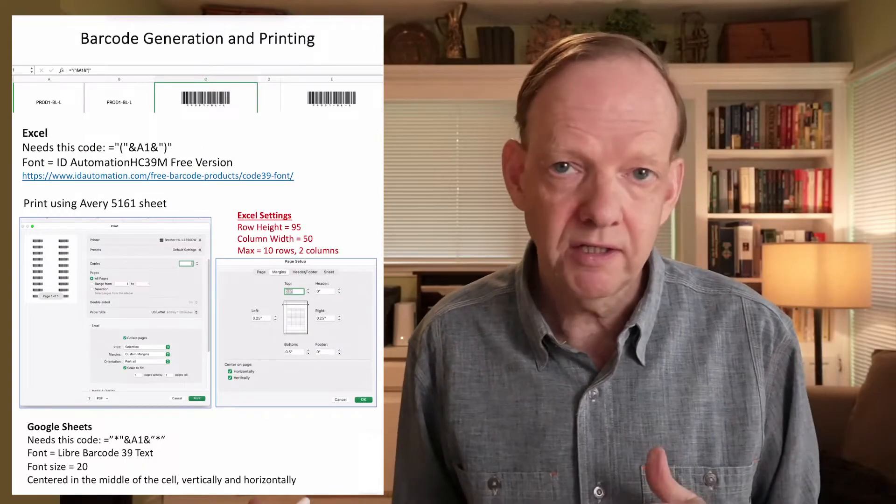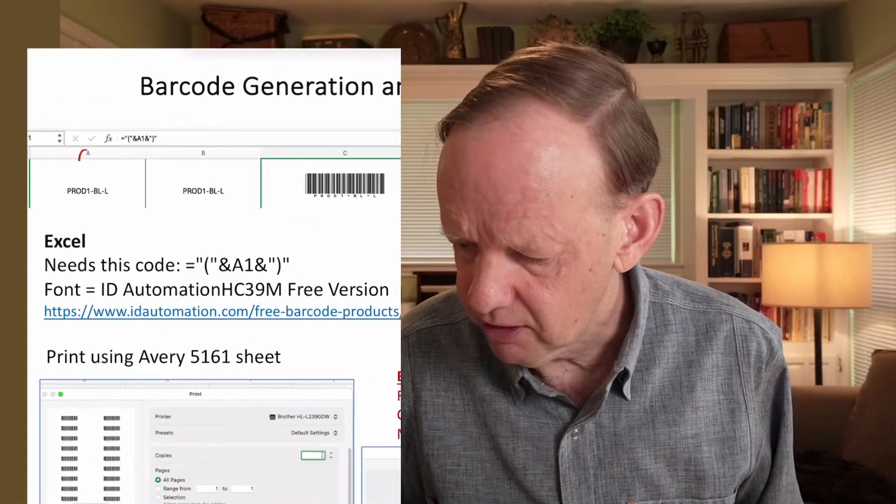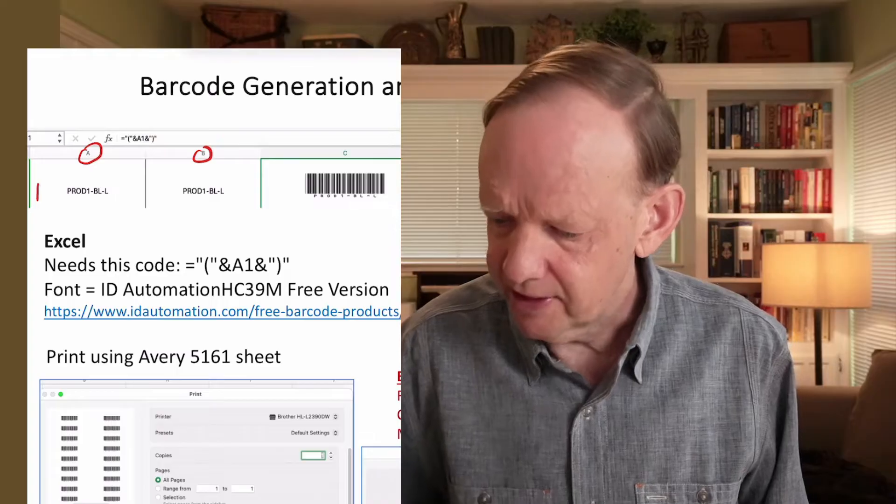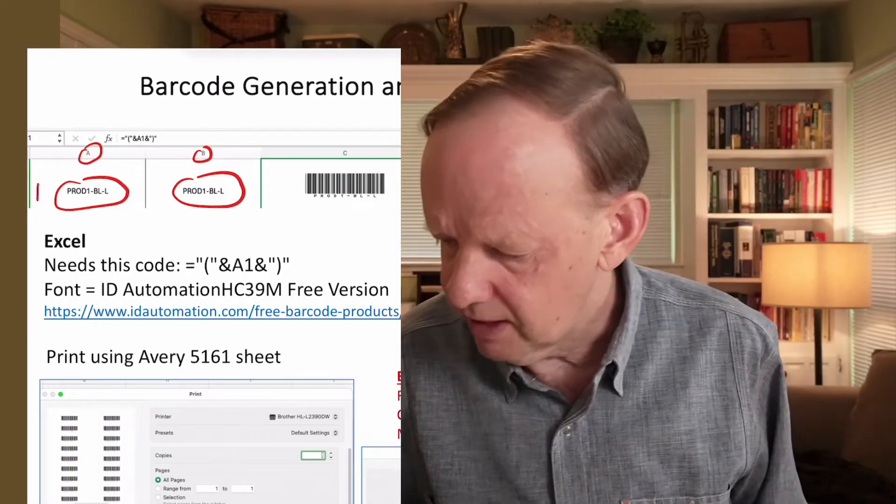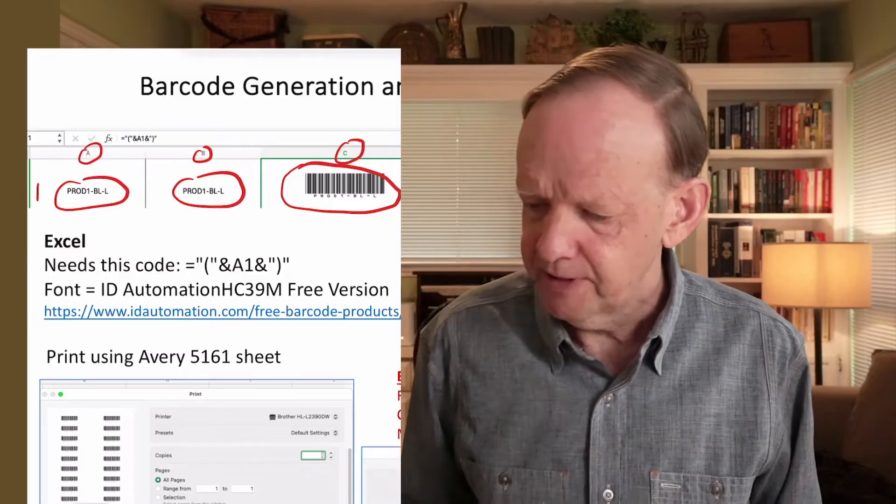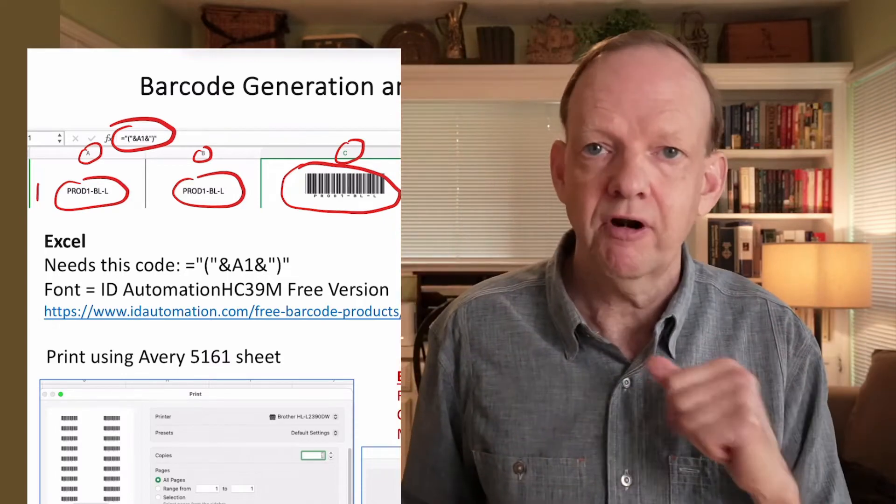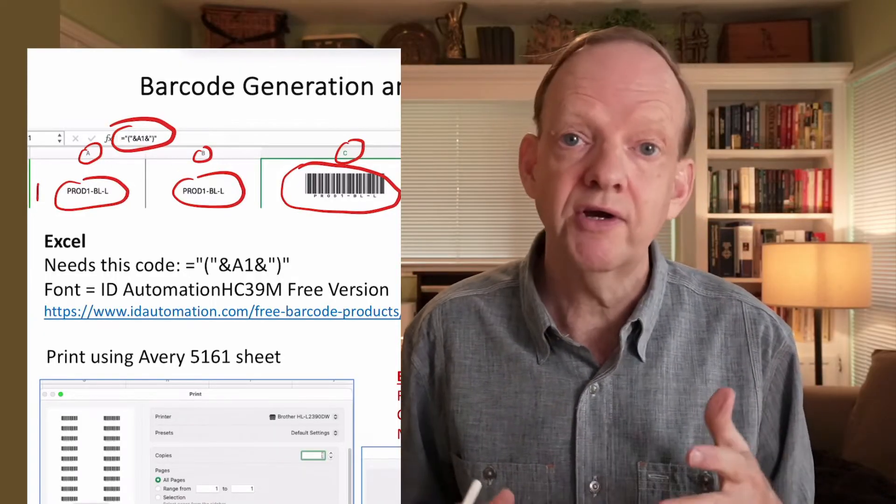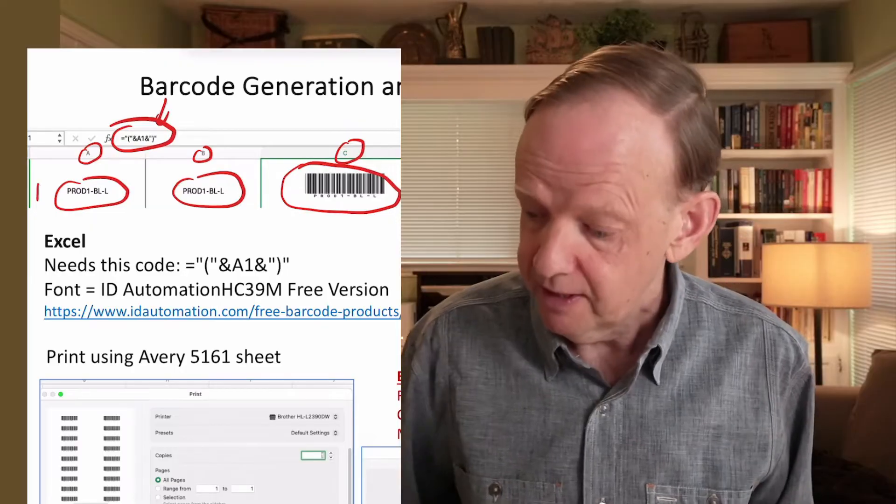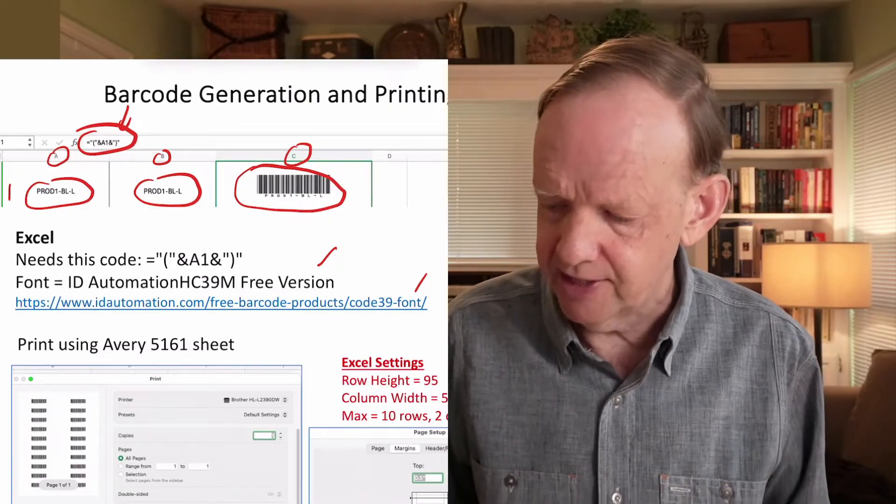If you decide on the approach to build your own barcodes with your own SKU system, that is quite doable. Take an example in Excel. Here we have column A and column B in Excel and row number one. I type in my SKU value here, my code I put together, or paste it in from another file. And then column C, the value of this cell here is equal to column A1 with the parenthesis and the ampersand before and after. And that converts it in Excel to a barcode.